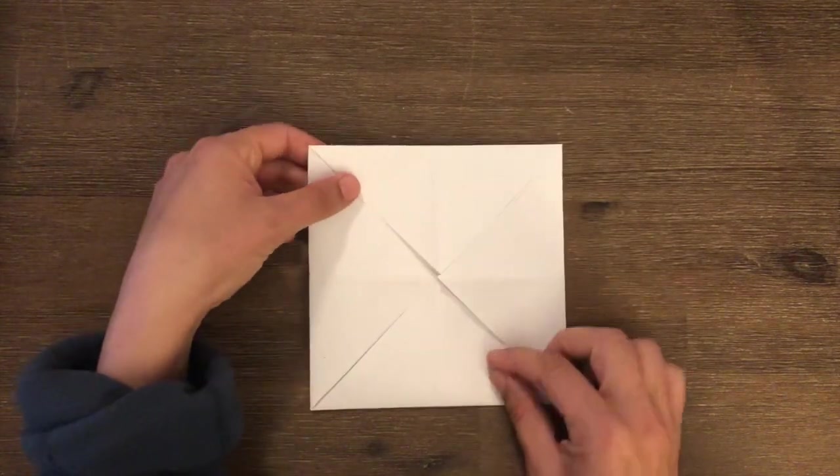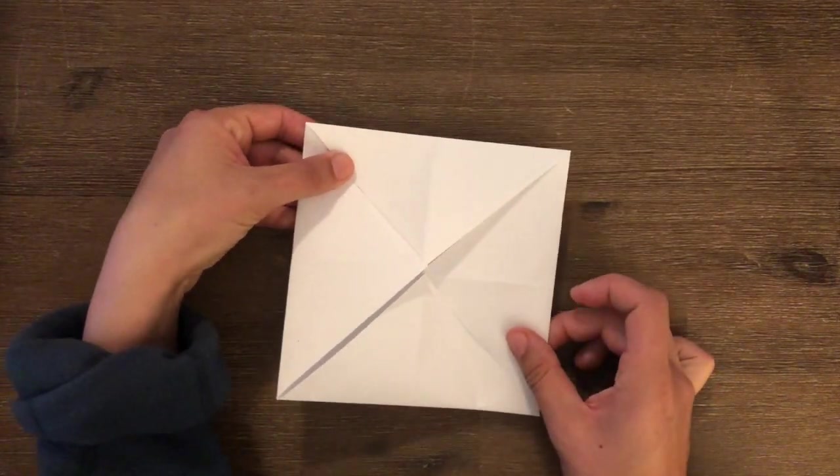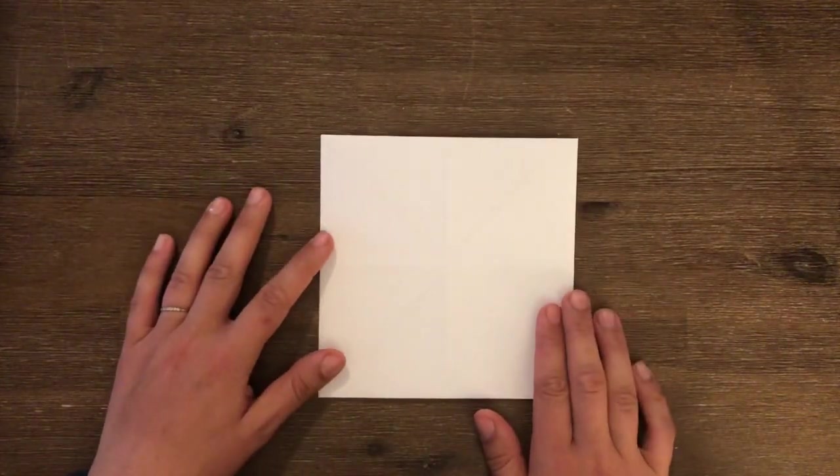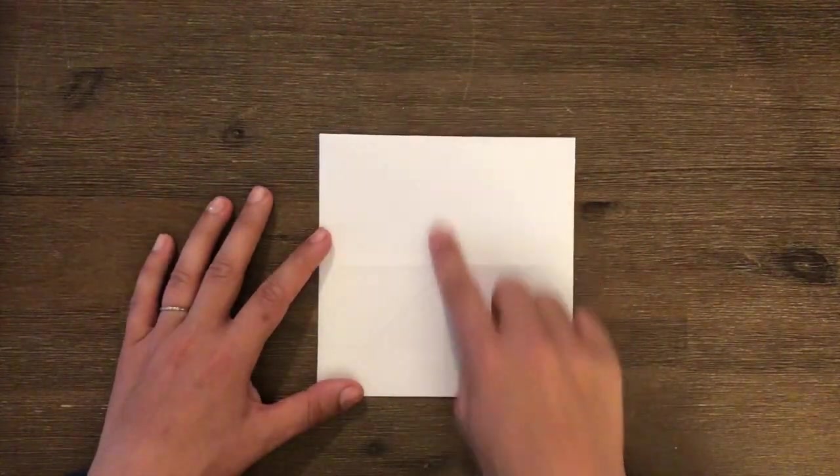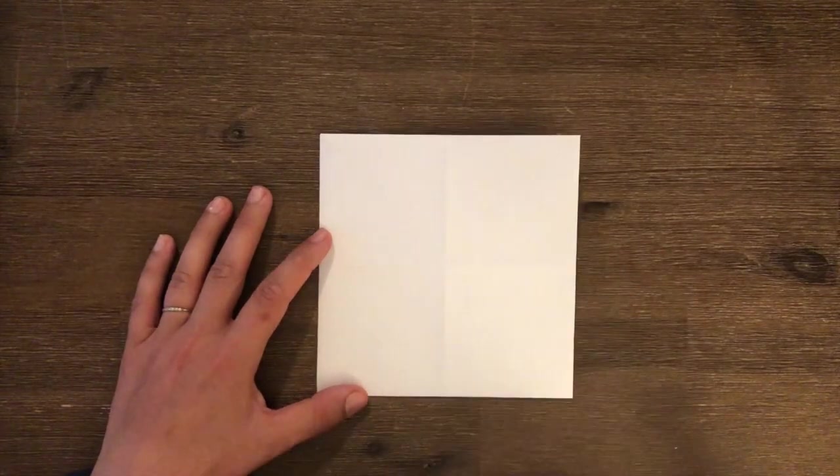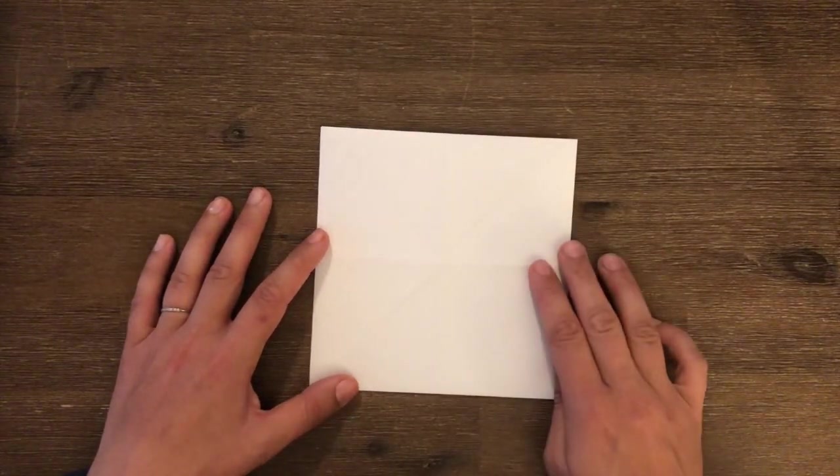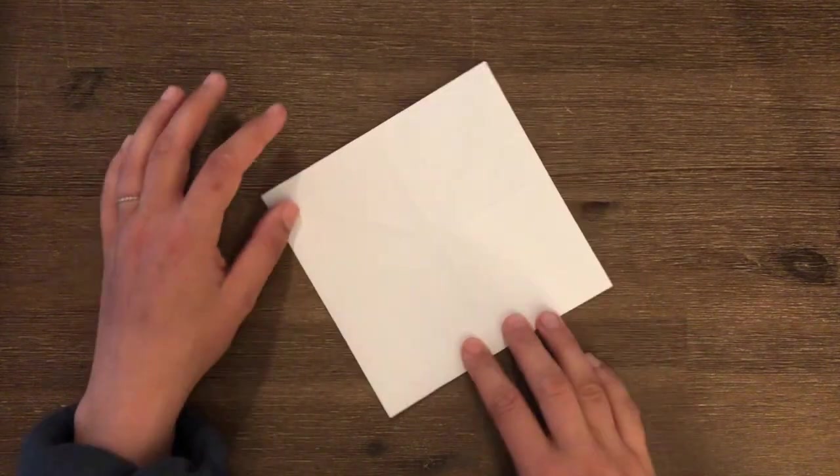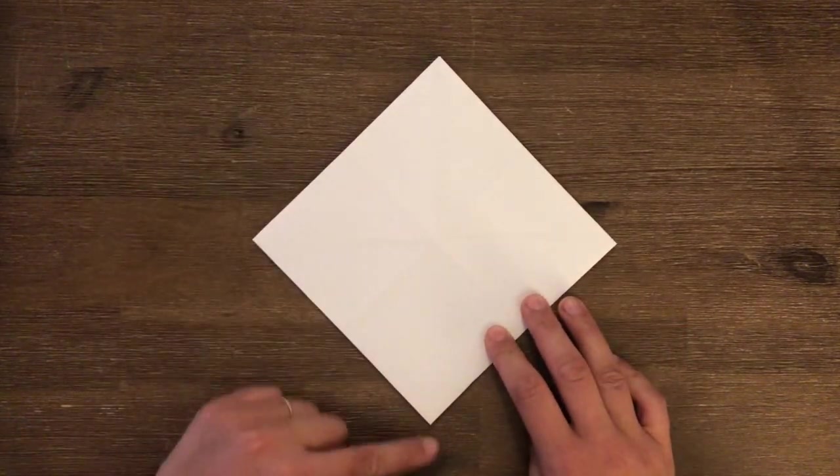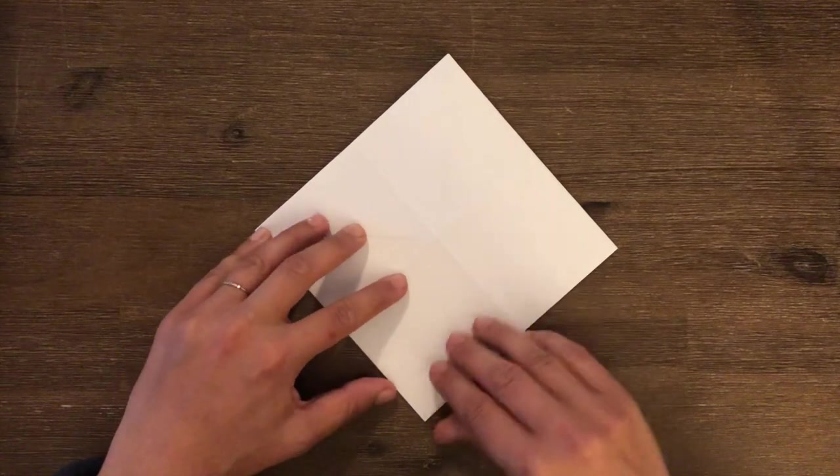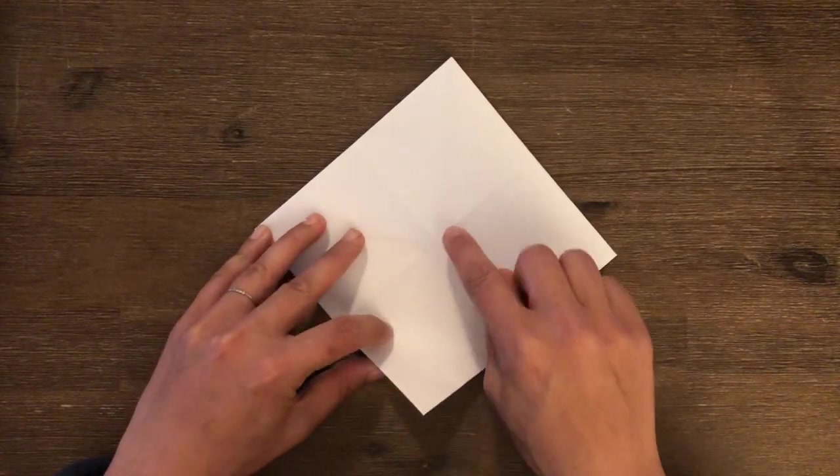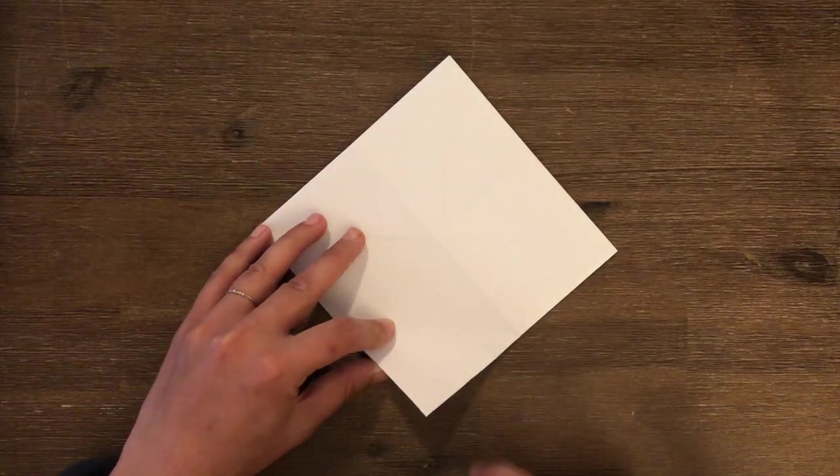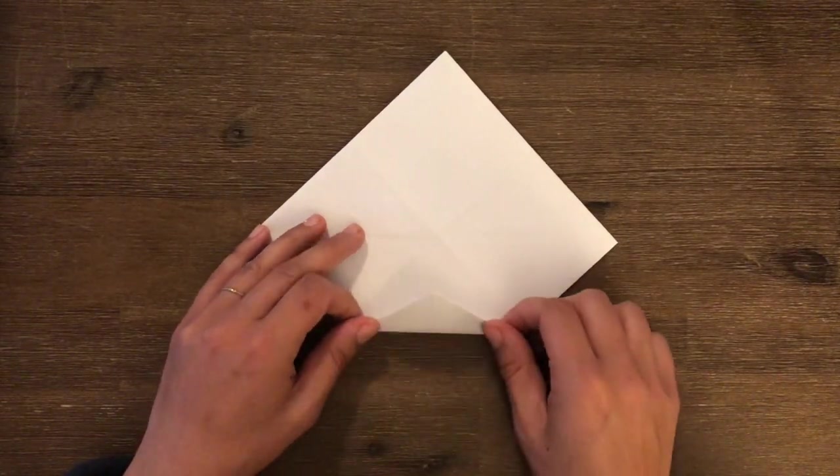Now I'm going to turn this over so that the flaps are on the bottom. So what I see on the top now is a smaller square with lots of folds all across. I'm going to do the exact same step as what we did last time, but with the smaller square. So I'm going to take the corner and point it towards me, and I'm going to start folding in the corner right to the middle. I can see where the middle is because I can see where all my old folds meet right in the center.